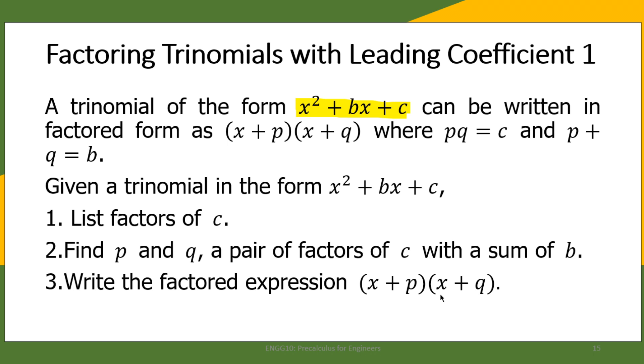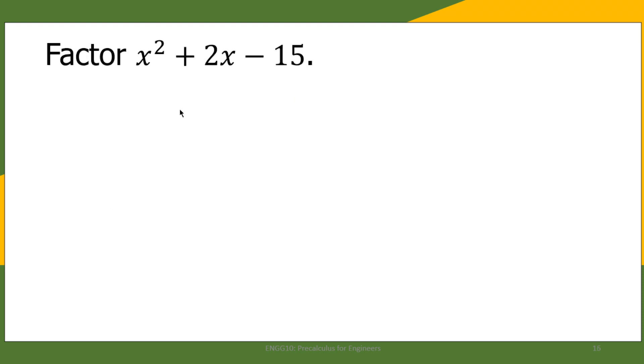We shall illustrate this in the following example. Factor x² + 2x - 15. This is of the form x² + bx + c, right? The value of c in this case is negative 15.